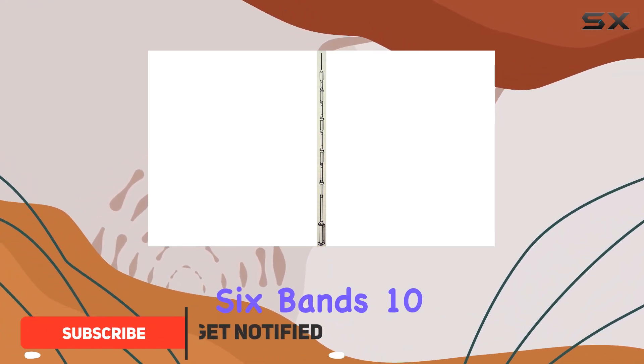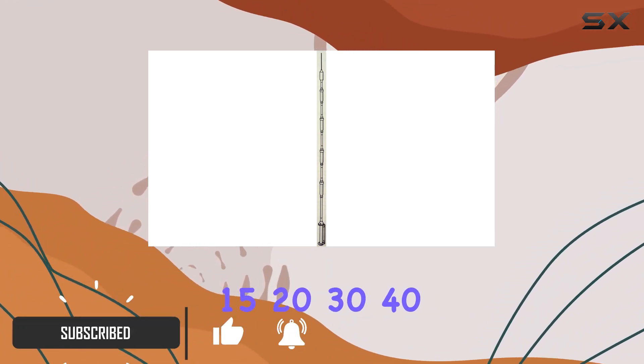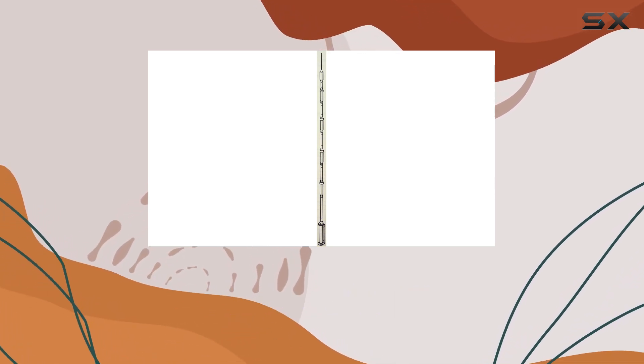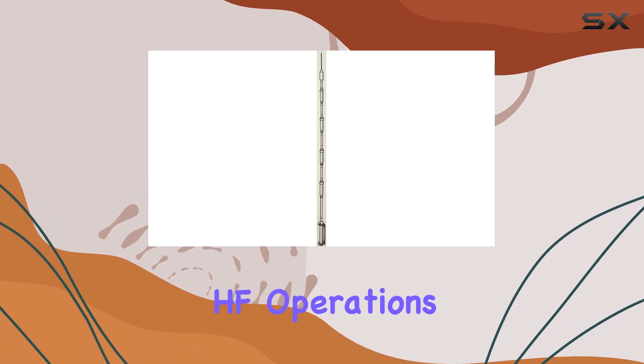This antenna covers six bands: 10, 15, 20, 30, 40, and 75 or 80 meters, making it an excellent all-rounder for various HF operations.